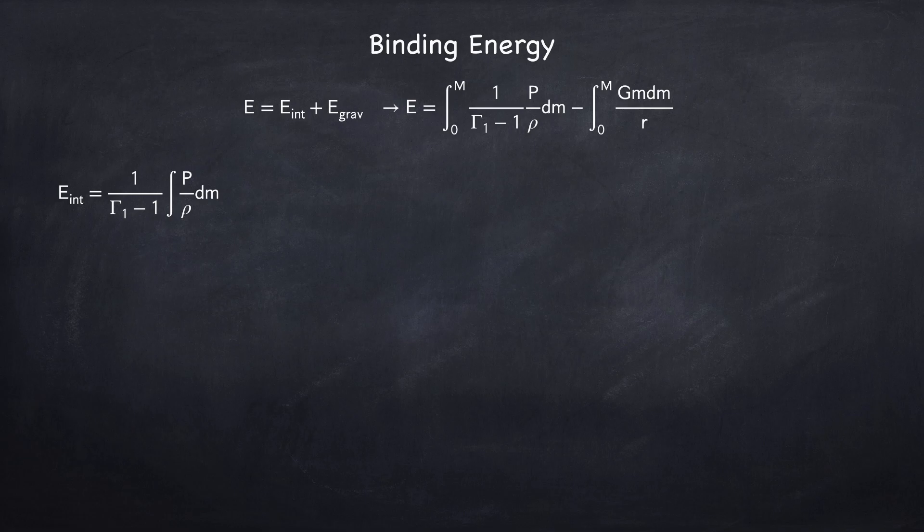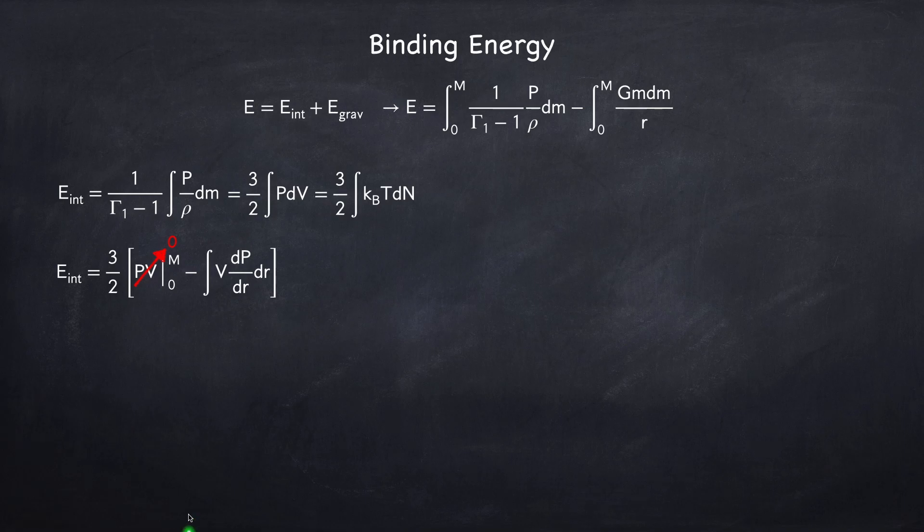And p over rho dm can be written in multiple ways. To calculate this integral, I'm going to use this form, three halves integral of pdv, which I can start off by integrating by parts, and the first term here on the boundaries goes to zero because the pressure at the surface is zero and the volume at the center of the star is zero. So I'm left with negative three halves times this integral.